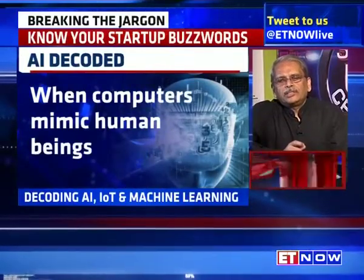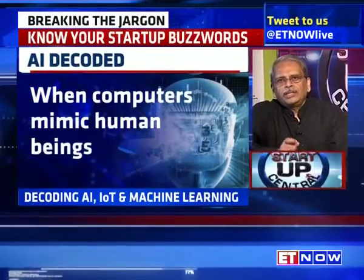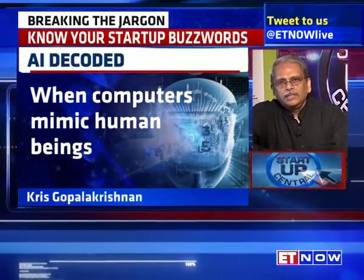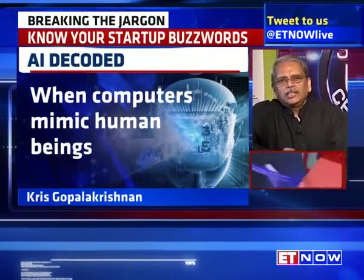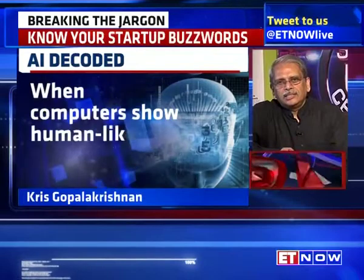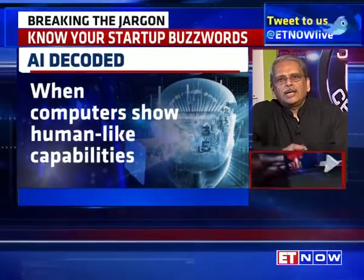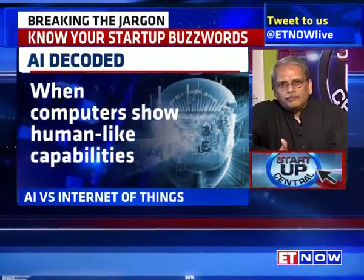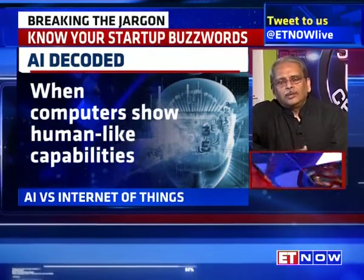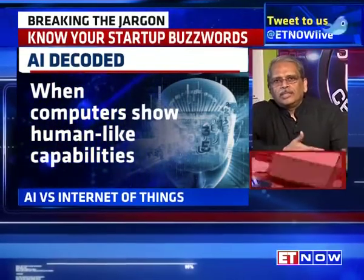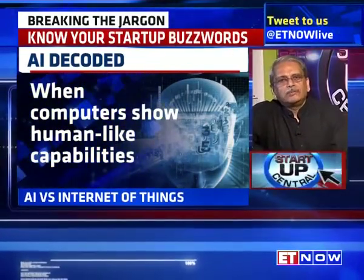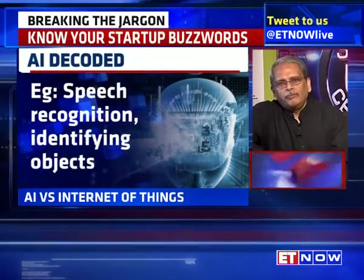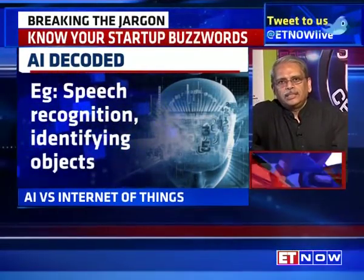When computers mimic human beings, they show human-like capabilities — that's called artificial intelligence. For example, if they can recognize spoken speech or spoken word, that's a form of artificial intelligence. When they recognize objects, that's also a form of artificial intelligence.